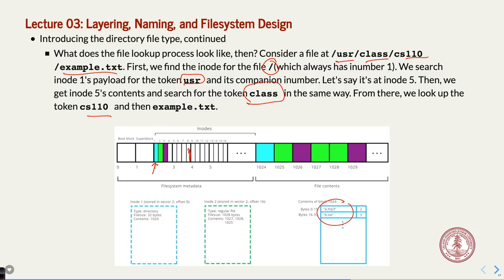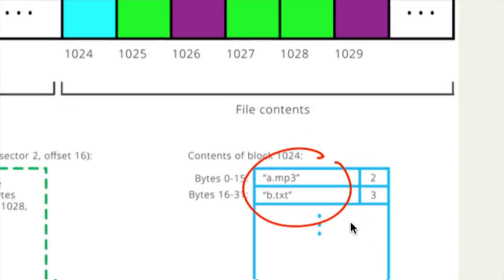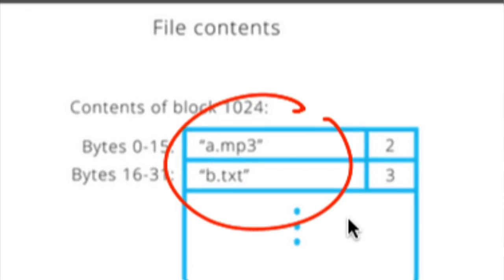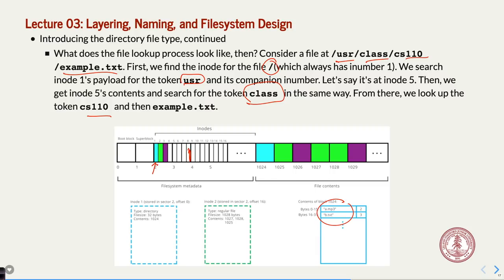Question: are the directory entries relative offsets or explicit iNumbers? They are the explicit iNumber associated with each file. So it's: go to iNumber 2, starting at sector 2 in the file system — start counting down until you get to that number. You do a little arithmetic. Two bytes for the iNumber means about 16,000 different iNodes maximum — when the hard drive was five megabytes, that didn't really matter much.